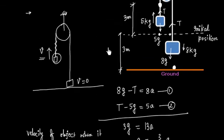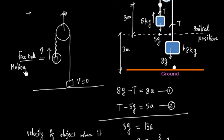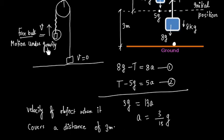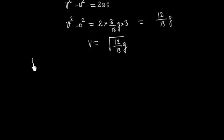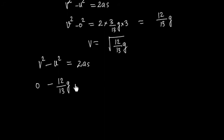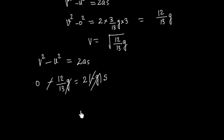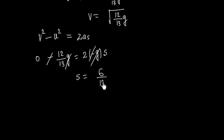After the string becomes slack, this is simply free fall — motion under gravity. Applying v² − u² = 2as, with final velocity = 0, initial velocity u² = 18g/13, and acceleration = −g: the additional distance traveled is s = 9/13 meters. So the 5 kg mass travels an extra 9/13 meters upward after the string goes slack.